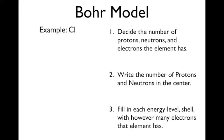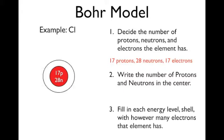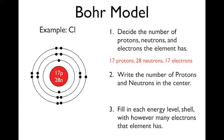So let's do an example. Chlorine. We're going to decide the number of protons, neutrons, and electrons that element has. It's got 17 protons, 28 neutrons, and 17 electrons. We're going to write that in the center, 17 protons, 28 neutrons, and then fill in each energy level with however many electrons it has. So it has 17 electrons, so we're going to fill in all 17 around the shells.